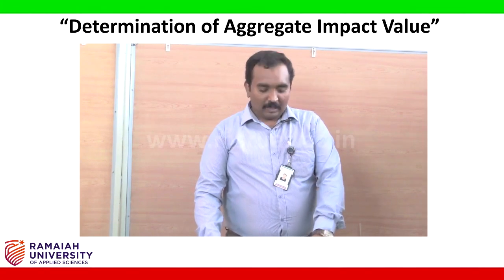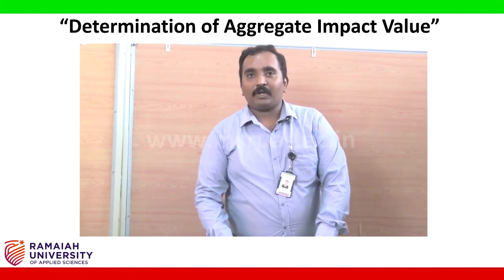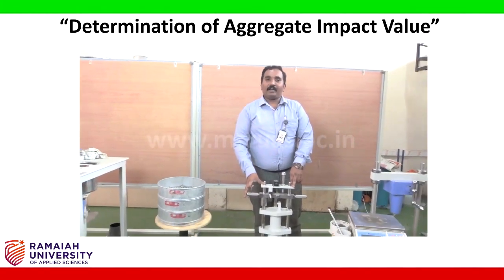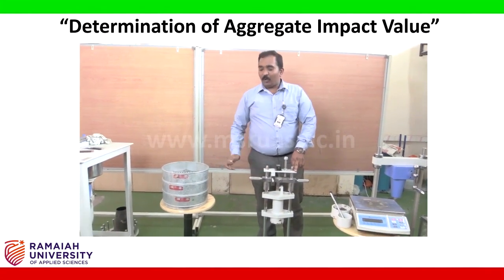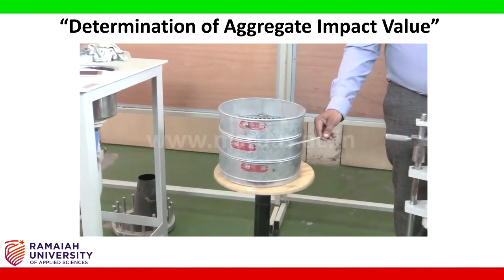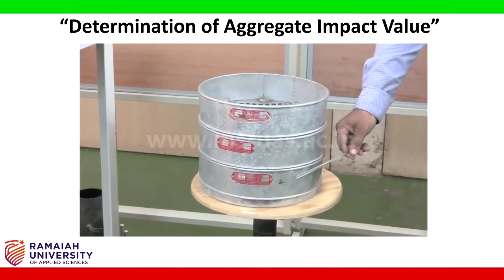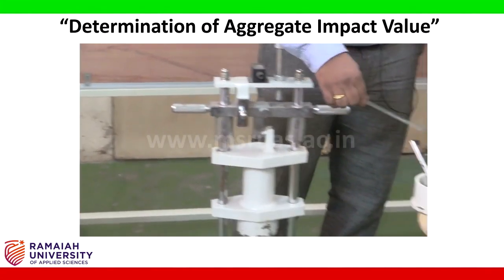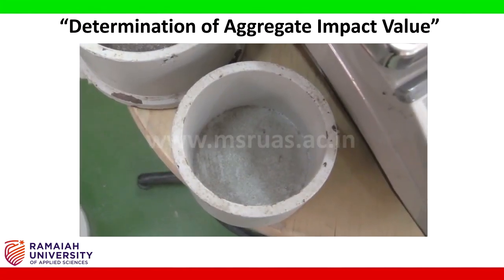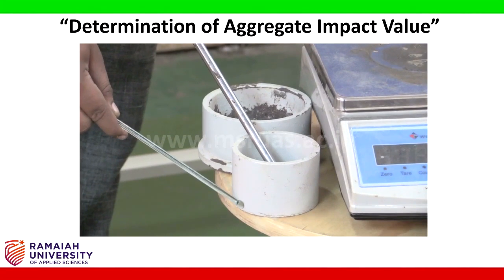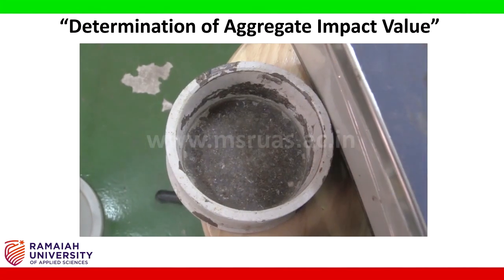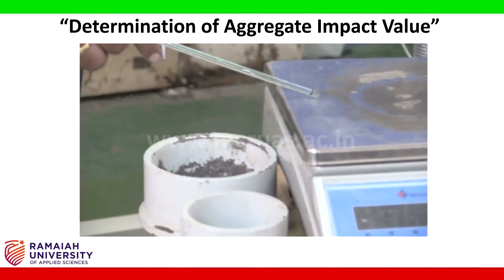Hi students, we are going to do the next experiment called the aggregate impact value test. First, I will explain the apparatus required. We need 3 standard IS sieves of sizes 12.5 mm, 10 mm and 2.36 mm. We also need one measuring cylinder of 7.5 cm diameter and 5 cm height, a tamping rod, a testing cylinder, and a weighing balance.